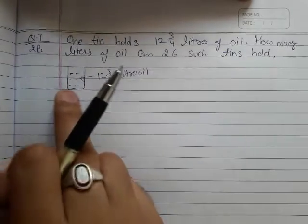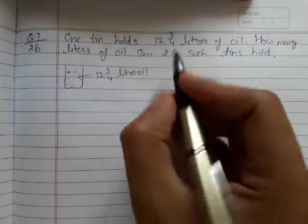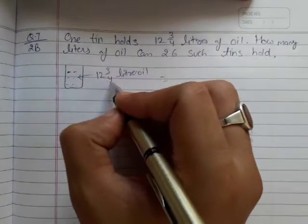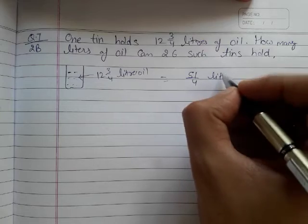So one tin can hold 12 and 3 over 4 liters of oil. If I convert this to improper fraction, I will get 12 fours is 48 and 3 is 51 upon 4 liters of oil.